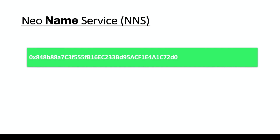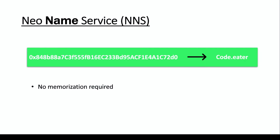The NEO Name Service maps your public key or transaction ID to a familiar, human-readable name — for example, mapping your public key to something like 'code.neo' or your own name. This means you do not need to memorize anything. It also enables speedy transactions since you can easily share your public key without copy-pasting long alphanumeric strings.